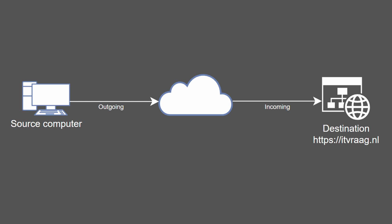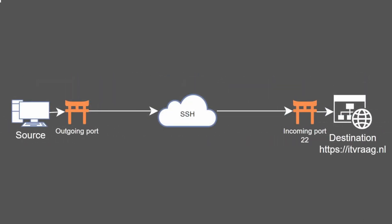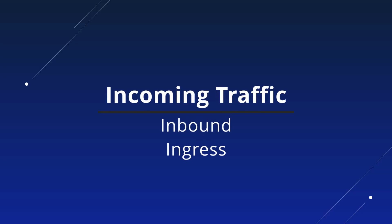Incoming and outgoing traffic is always from the perspective of a host. When two computers communicate with each other, the incoming traffic for one host is the outgoing traffic for the other, and vice versa. When data is received by a computer, we're talking about incoming traffic, which means the host is listening on a port to receive that data. Depending on the type of data, different port numbers would be used. Incoming traffic is also known as inbound traffic or ingress.